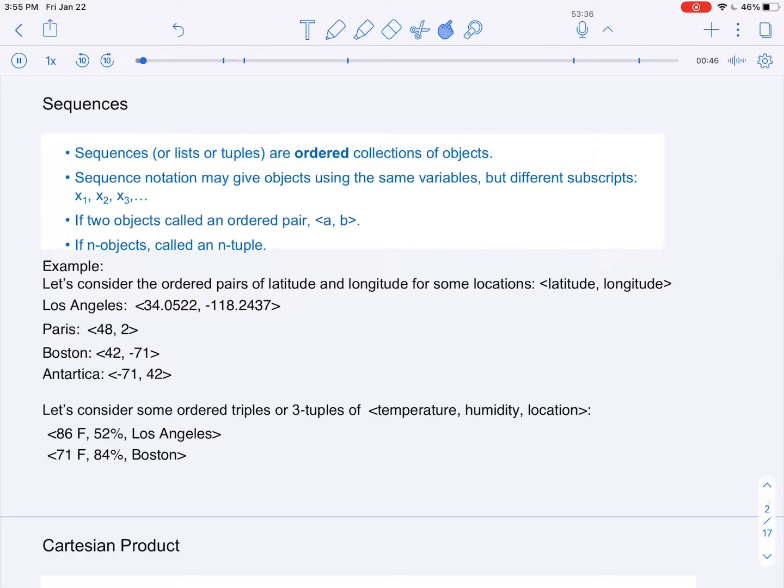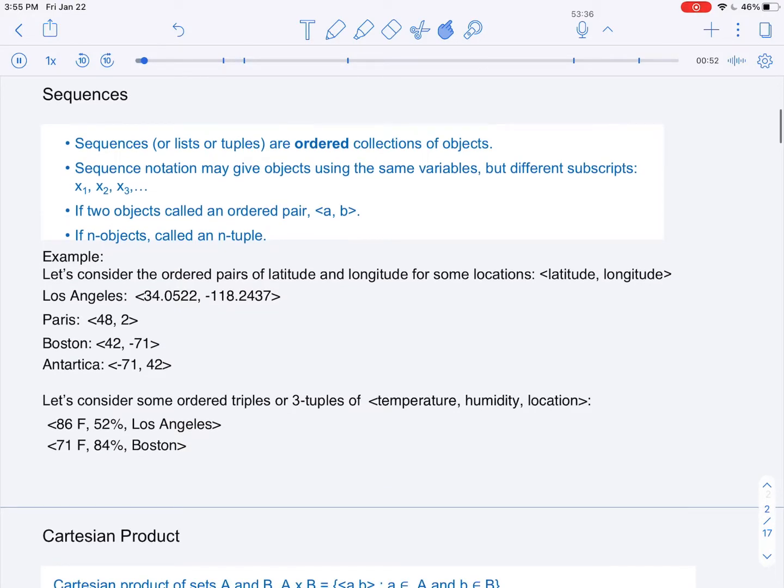If there are n objects in the sequence, we call it an n-tuple. Let's consider some ordered pairs of latitude and longitude for some locations: Los Angeles, Paris, Boston, and Antarctica.